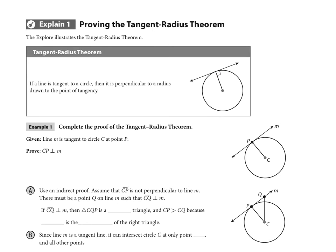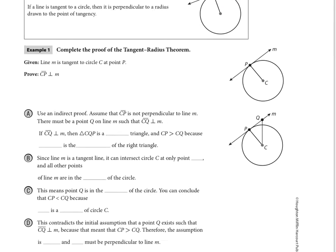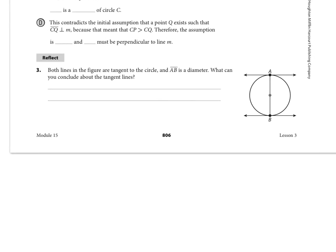So whenever you have a tangent and a radius, they're always going to meet at a 90 degree angle. So for your work here, I want you to look at the reflect at the bottom of this page, reflect number three, as we're using this theorem.